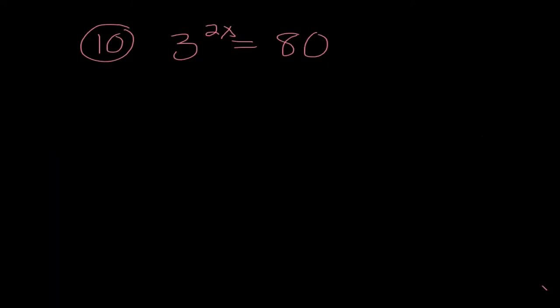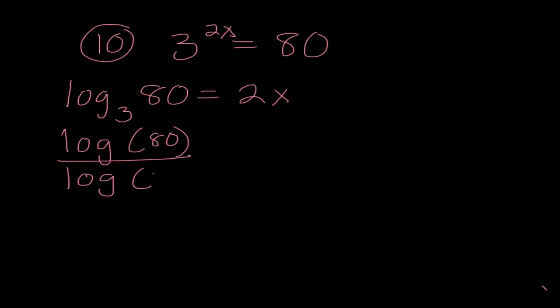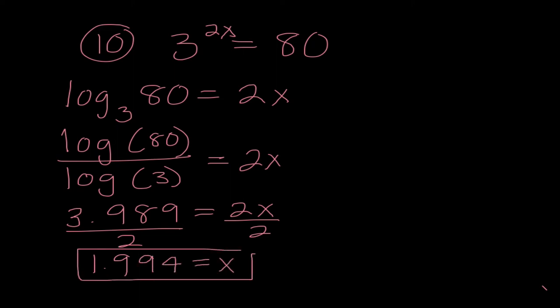And, number 10, which you may think is the last problem, but it's not, because I'm going to add two more on, because we are so advanced, and I want to make sure we feel good on our homework. So 3 to the 2X equals 80. I'm going to change forms, because my base here is already isolated. It's not something times 3 to the 2X, so I can jump ahead and just write log base 3 of 80 equals 2X. In my calculator, I'm going to do log of 80 divided by log of 3, which is 3.989. I'm keeping that entire thing exact in my calculator. When I divide by 2, I get 1.994 equals X. Super important that I am not rounding until my final answer.